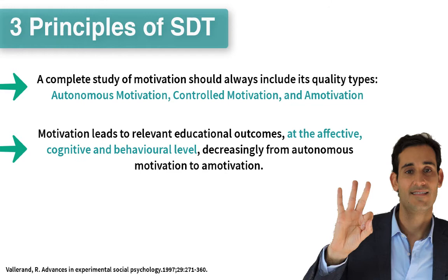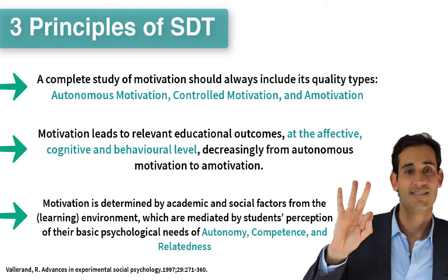Second, that a student's quality of motivation leads to relevant educational outcomes at the affective, cognitive, and behavioral level, decreasing from autonomous motivation to amotivation. And third, that students' motivation is determined by different academic and social factors of the learning environment, which are mediated by how students perceive these factors as satisfying or frustrating their basic psychological needs of autonomy, competence, and relatedness. We will cover all these points in this and the following videos.